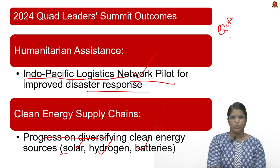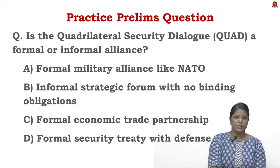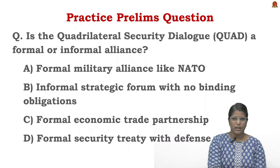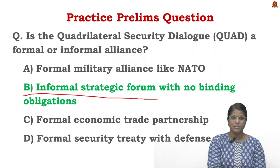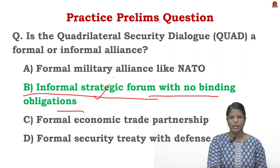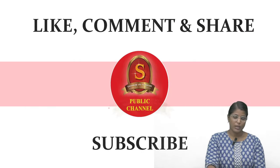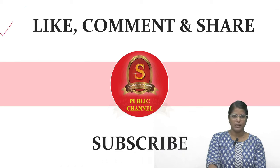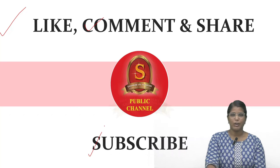So far we covered QUAD — its origin, member countries, functions, and important outcomes. For the prelims question: Is the Quadrilateral Security Dialogue a formal or informal alliance? The correct answer is Option B: an informal strategic forum with no binding obligations. This concludes today's news article discussion. If you liked the video, hit like, comment, and subscribe to Shankara IAS Academy's YouTube channel.